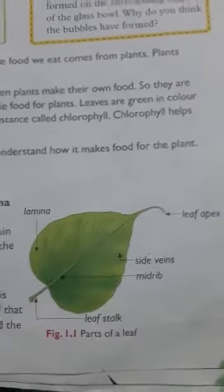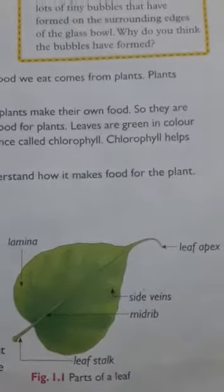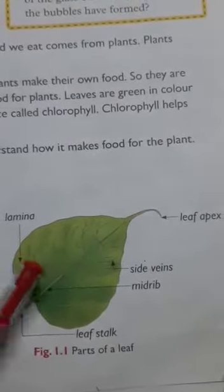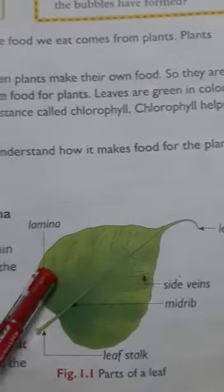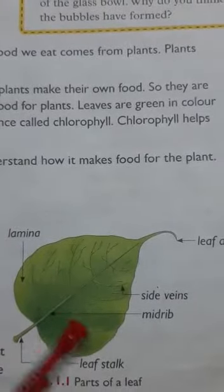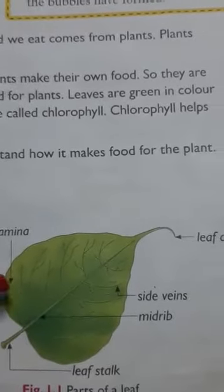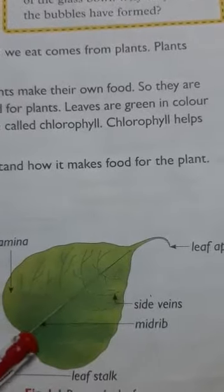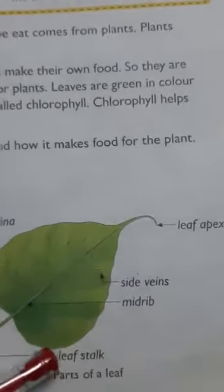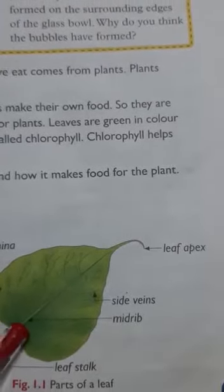Let us study the parts of a leaf. The broad flat part of a leaf is called the lamina, also known as the leaf blade. There are many tube-like structures on the leaf called veins. The main thick vein running through the middle of the leaf is called the midrib.